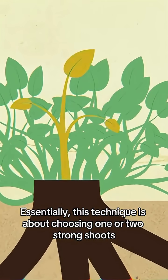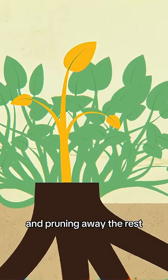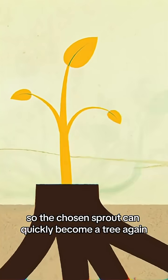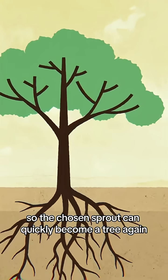Essentially, this technique is about choosing one or two strong shoots and pruning away the rest, so the chosen sprout can quickly become a tree again.